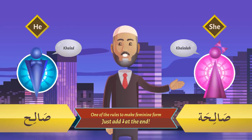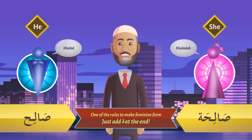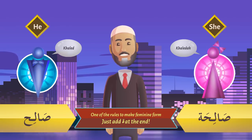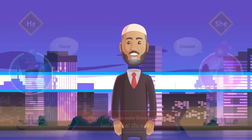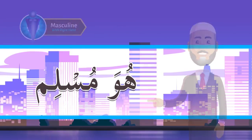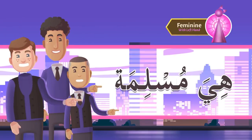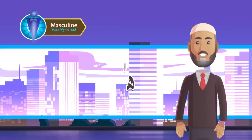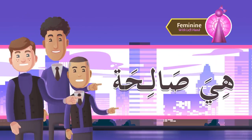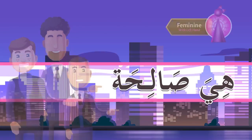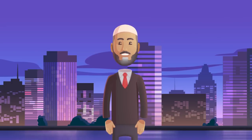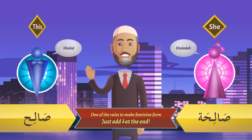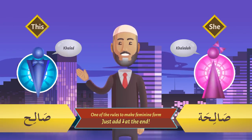Can you give me the feminine forms of these sentences using TPI? هُوَ مُسْلِمٌ — هِيَ مُسْلِمَةٌ. هُوَ مُؤْمِنٌ — هِيَ مُؤْمِنَةٌ. هُوَ صَالِحٌ — هِيَ صَالِحَةٌ. ماشاء الله!